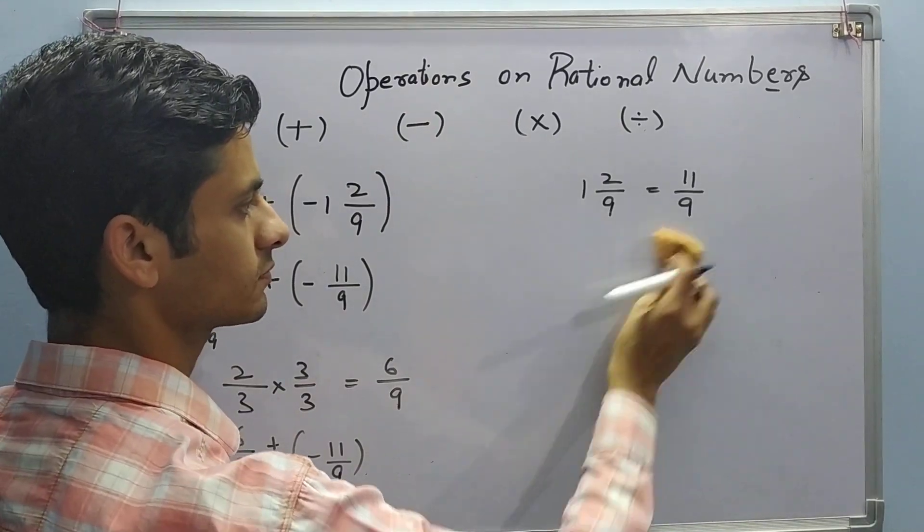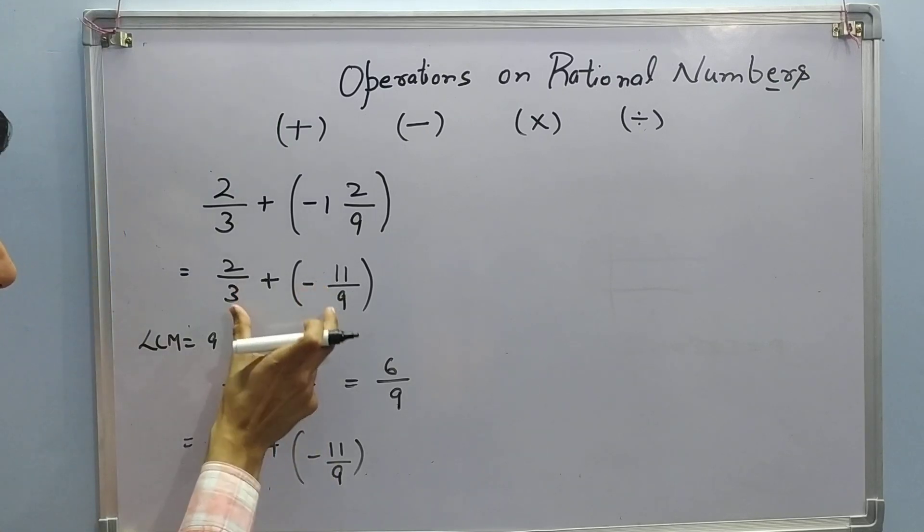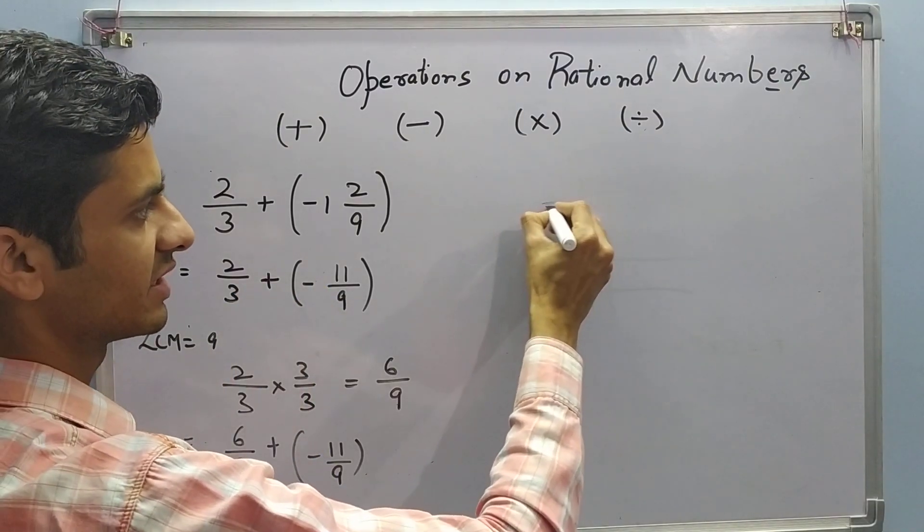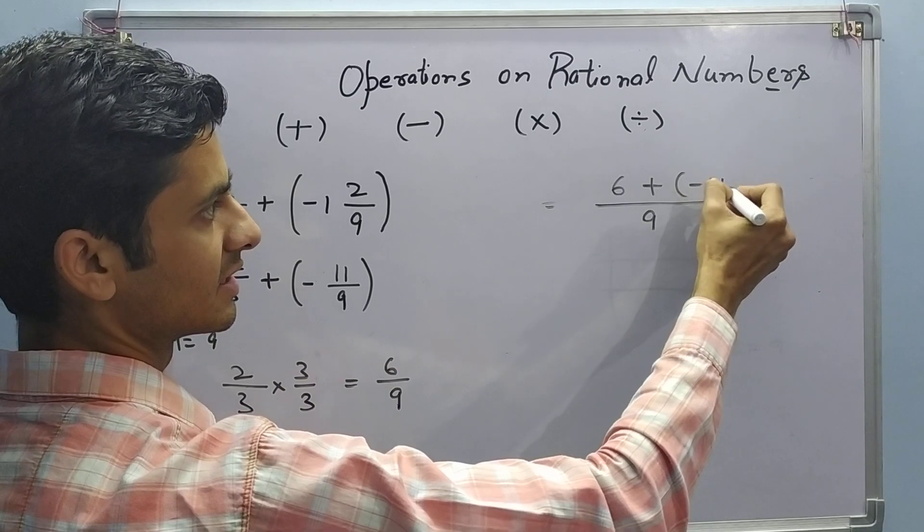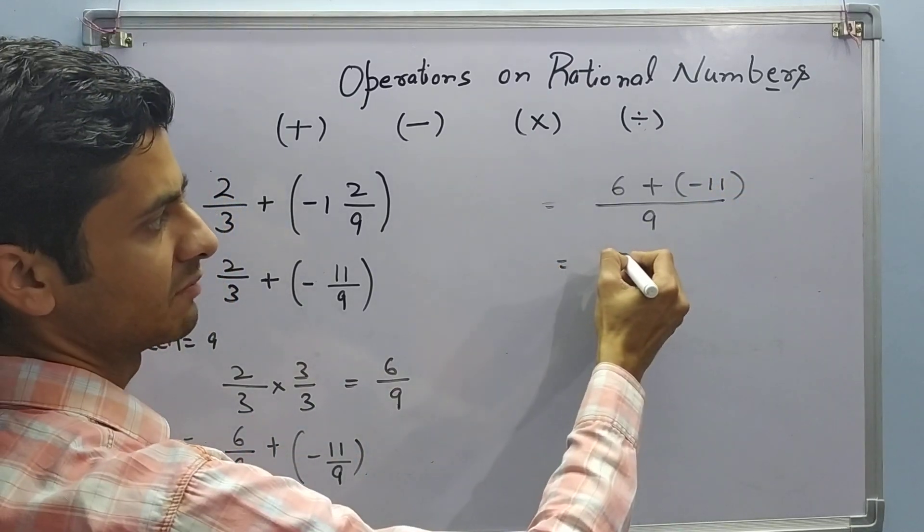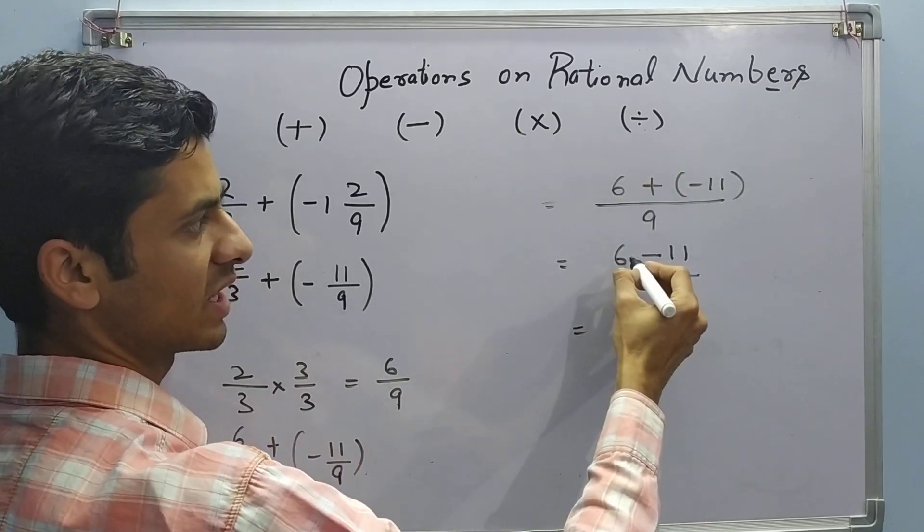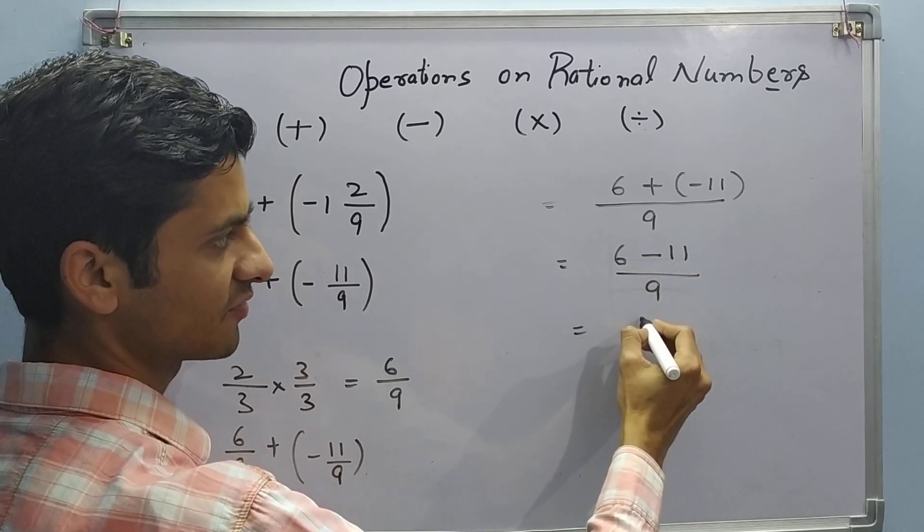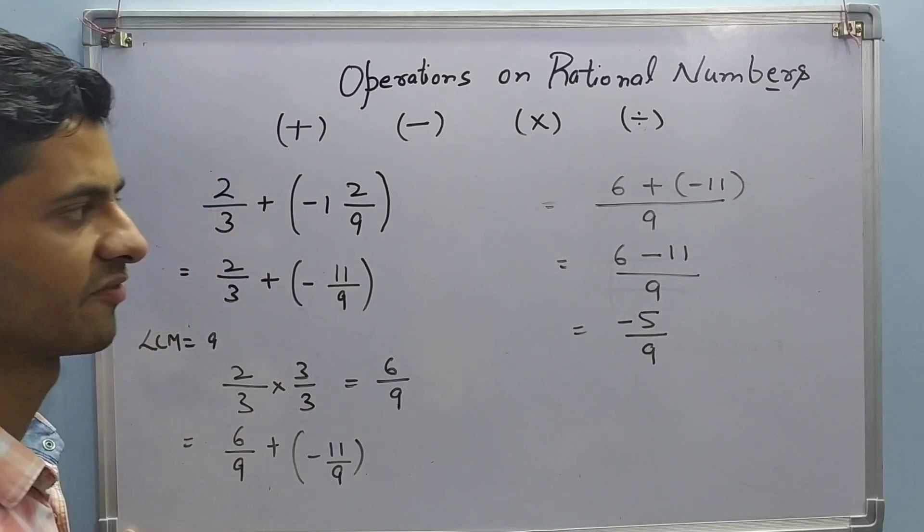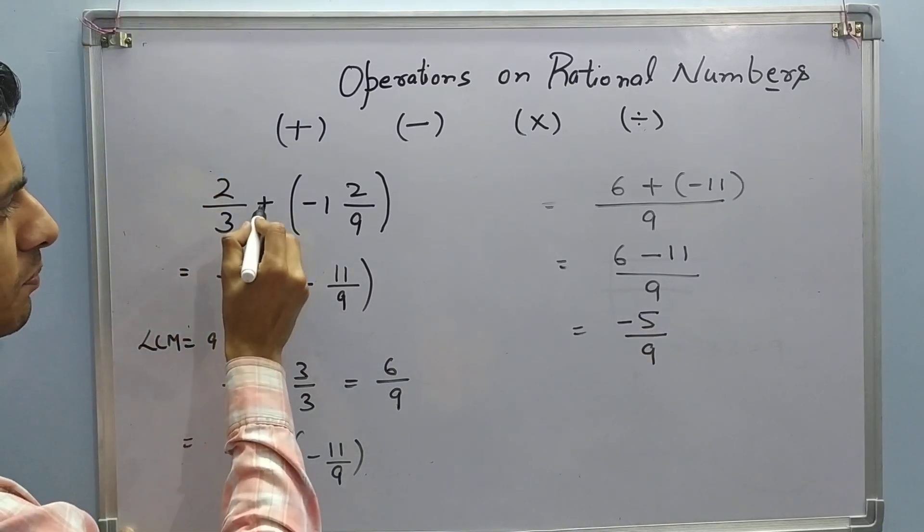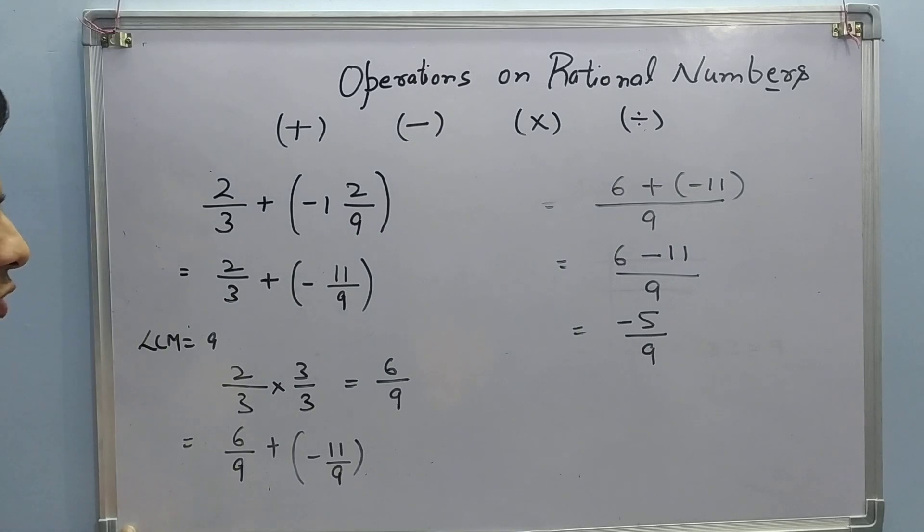Now proceeding further. LCM of now we have made the denominator equal. So it can be written as 9, 6 plus negative 11. It can be written as 6 minus 11 upon 9, plus minus. One number is positive, one number is negative. Taking the difference it comes out to be 5 and sign of bigger number minus, 5 upon 9. So 2 upon 3 plus minus 1 whole 2 upon 9 comes out to be negative 5 upon 9.